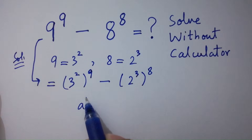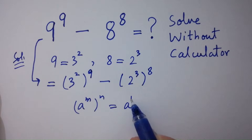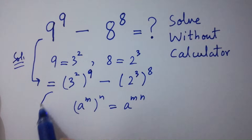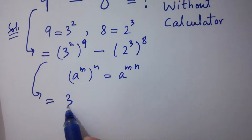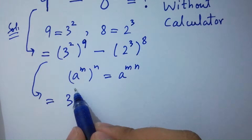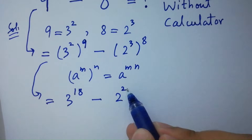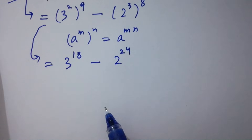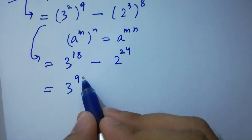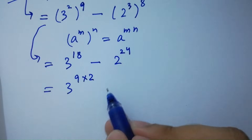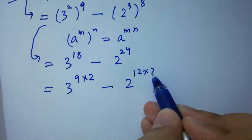Using the rule a to the power m, to the whole power n, equals a to the power mn, it will be 3 to the power 2 times 9, which is 18, minus 2 to the power 3 times 8, which is 24. That gives us 3 to the power 18 minus 2 to the power 24.